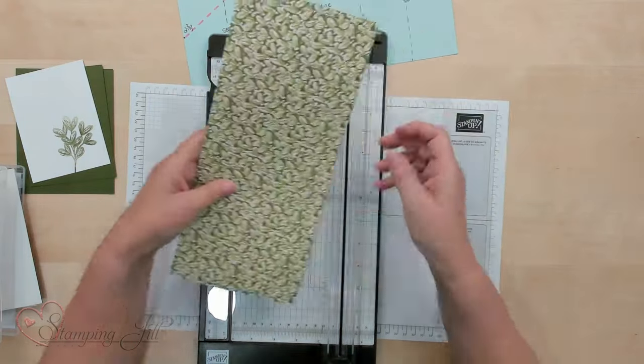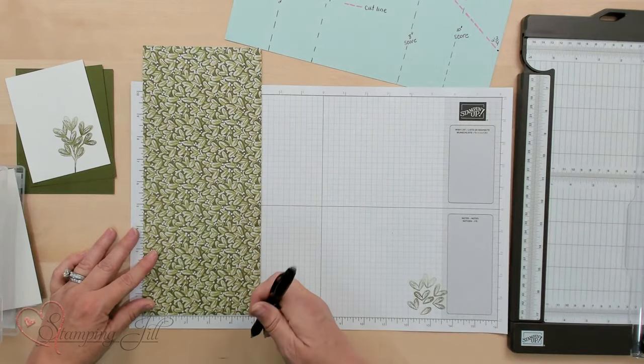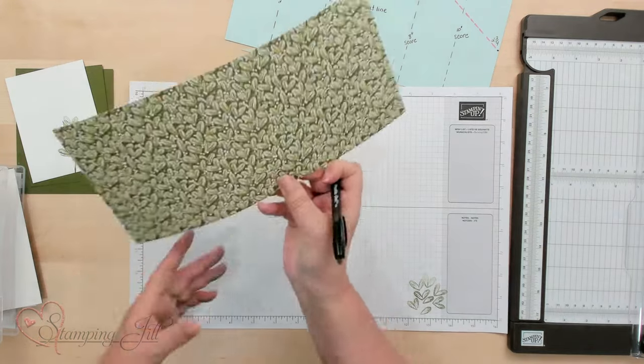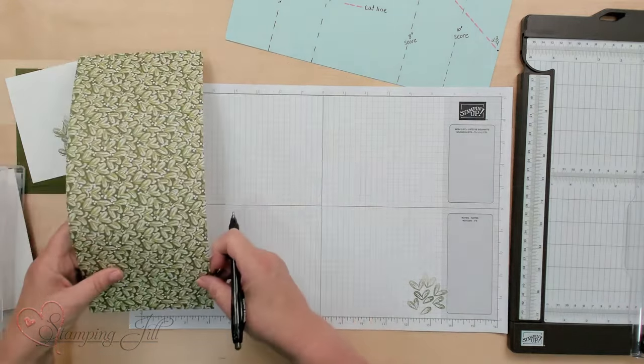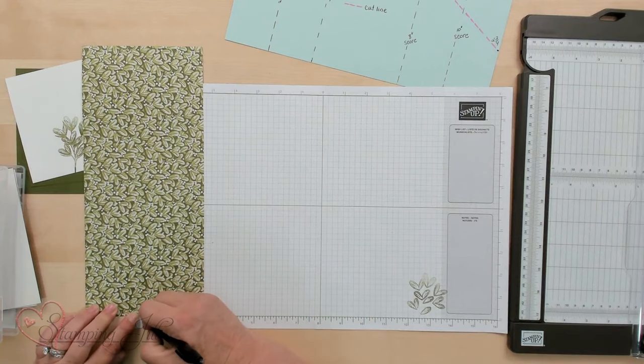We've got that all scored. I'm going to mark this at 2 3/4. So put a little hashtag right there and it will be fine. And then this other side also 2 3/4. Put a little mark there.